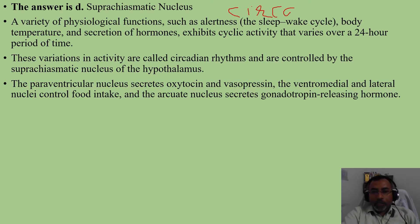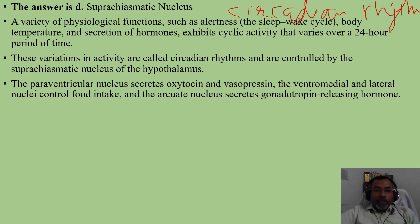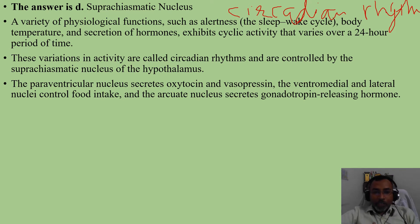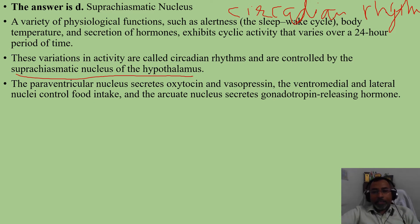Suprachiasmatic nucleus is responsible for controlling the circadian rhythm. A variety of physiological functions such as alertness, sleep-wake cycle, body temperature, and secretion of hormones exhibit cyclical activity that varies over a 24-hour period of time. These variations are called circadian rhythm, and it is controlled by the suprachiasmatic nucleus of the hypothalamus.